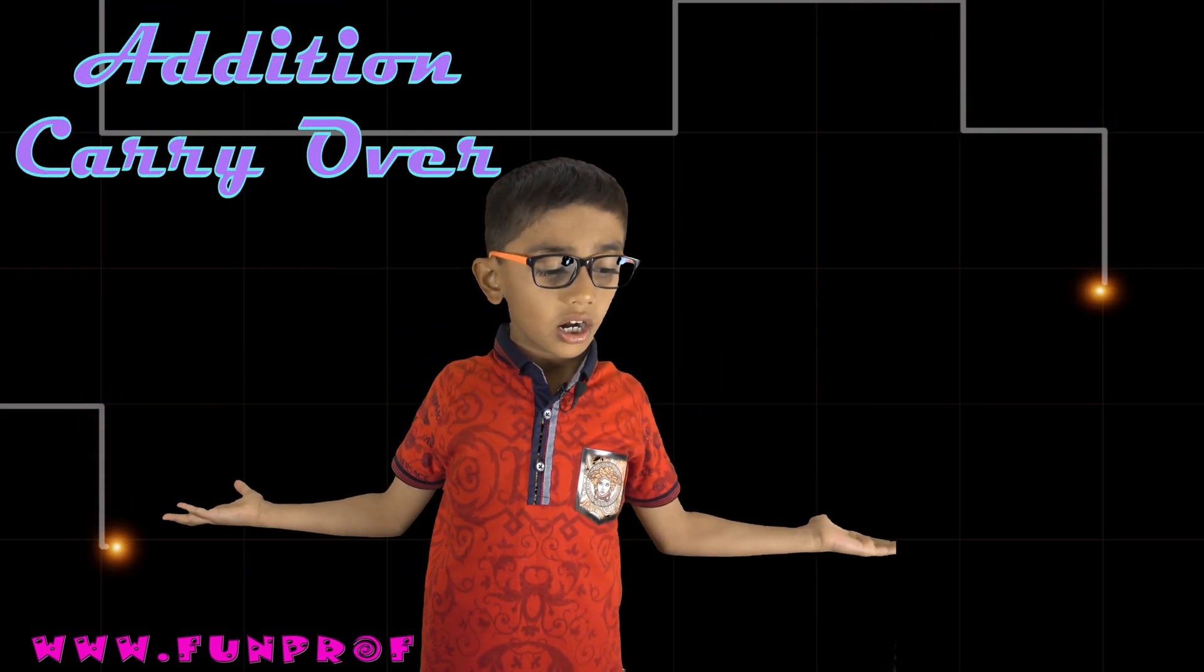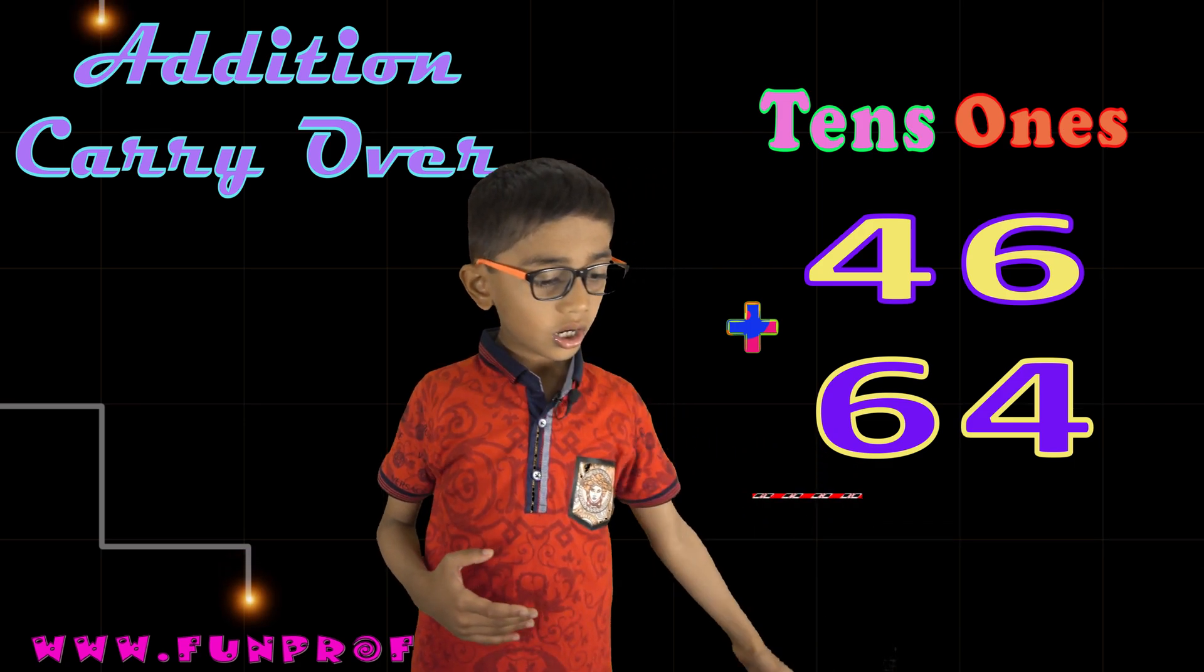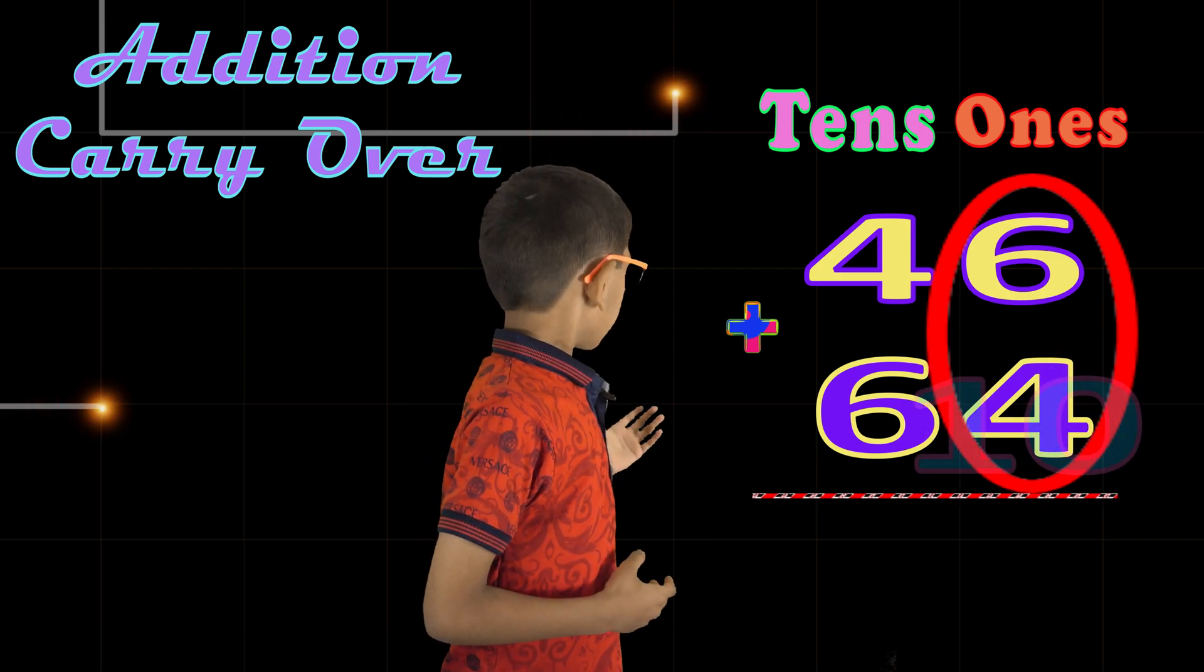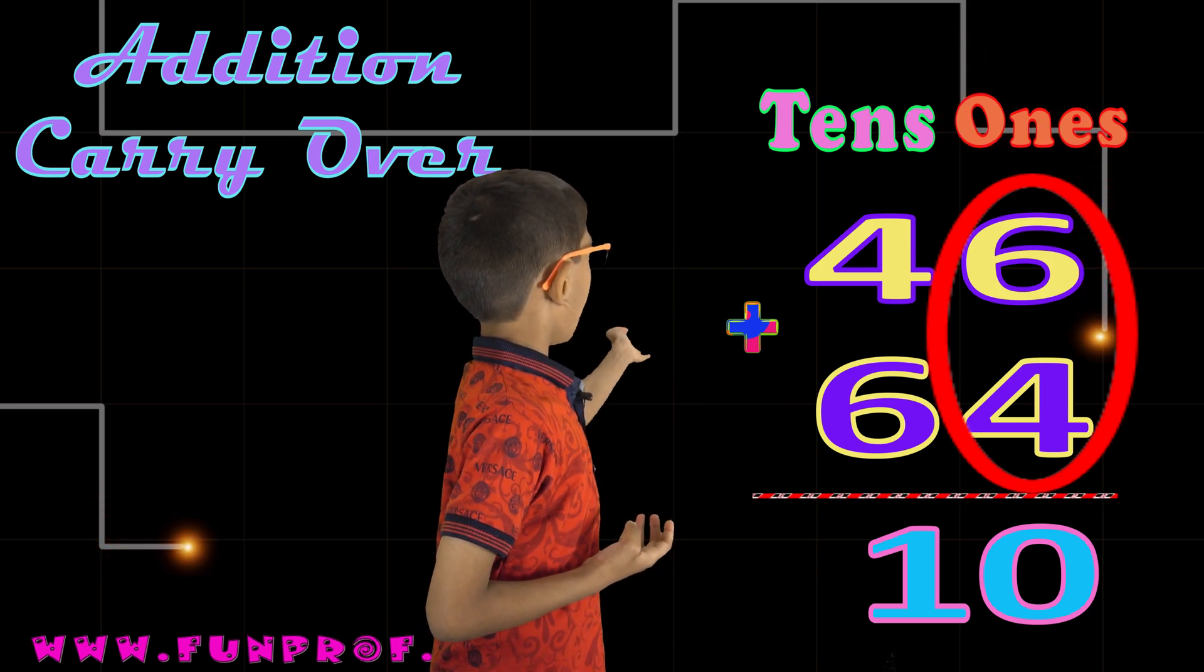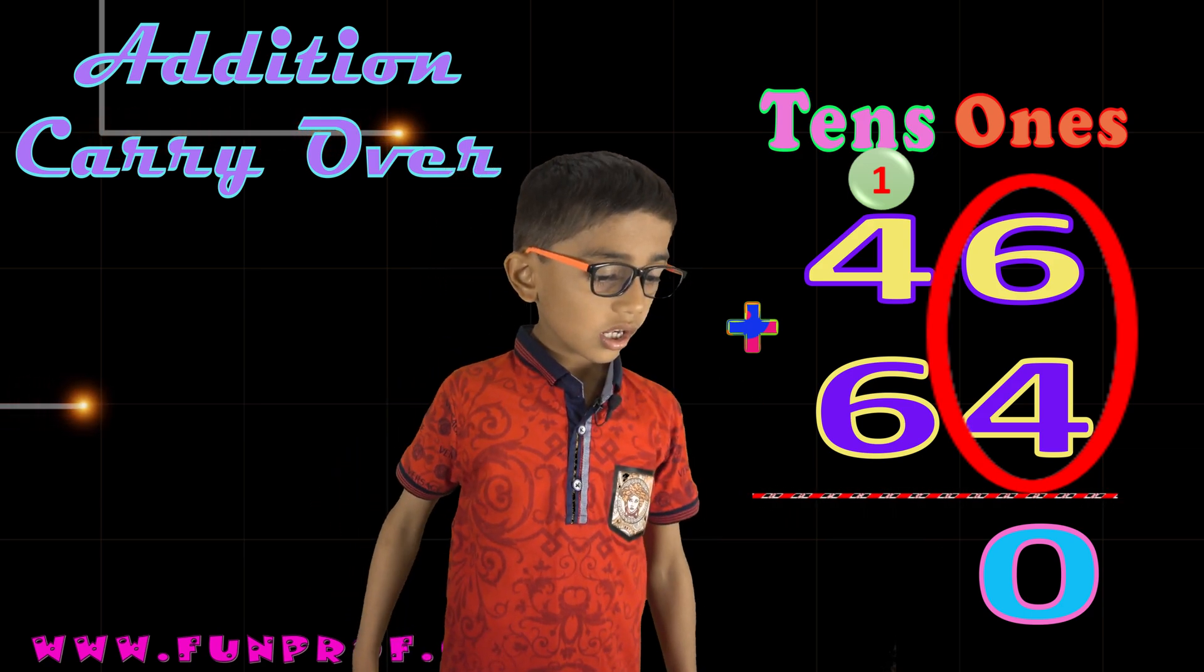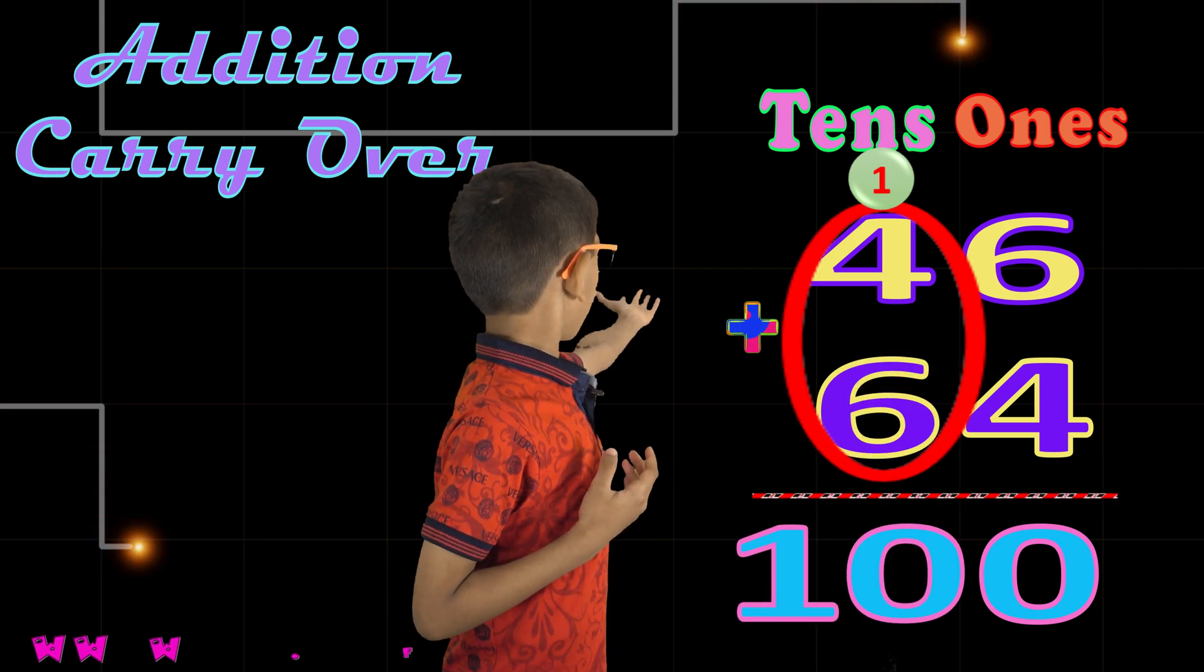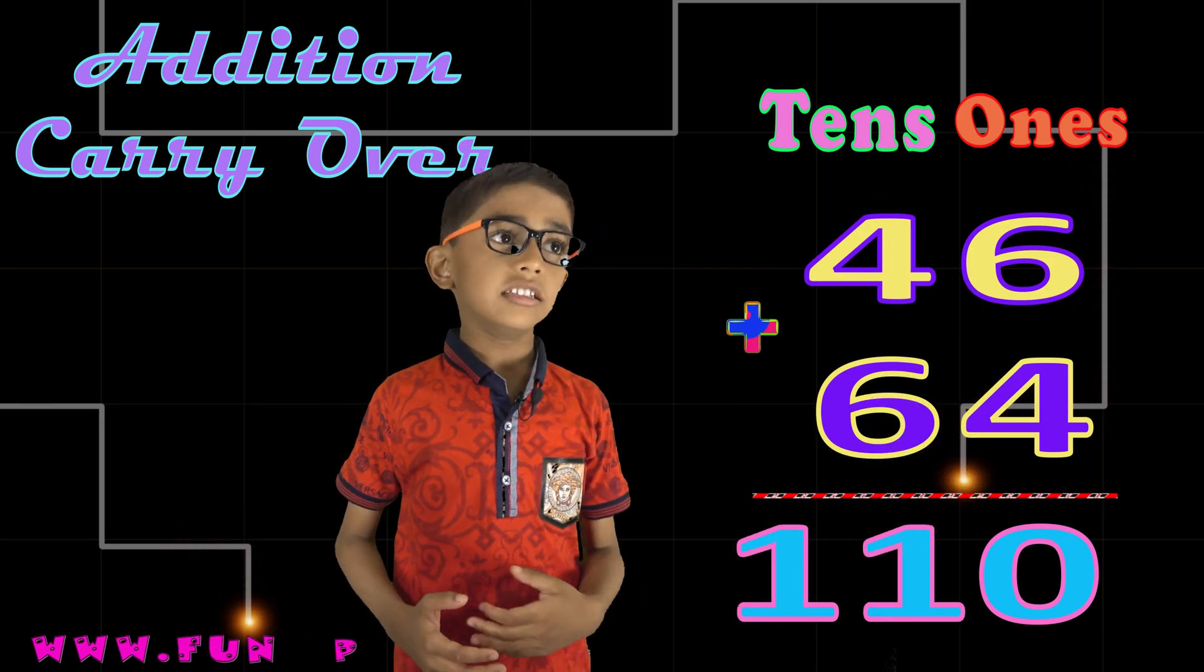Now we will do addition with carryover. 46 plus 64. 6 plus 4. 6 plus 4 is 10, so I will put 0 here and tens 1 here, because there is no space here. So I will put the 1 here. So this becomes 10. And 4 plus 6 is equal to 10, and the 1 is up, so I add it. It becomes 11. Here is 11. The answer is 110.